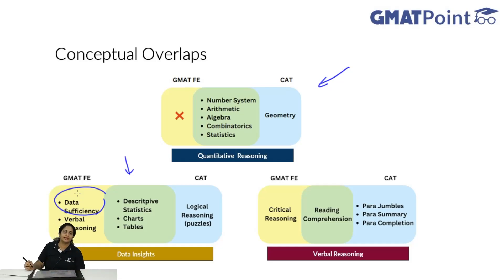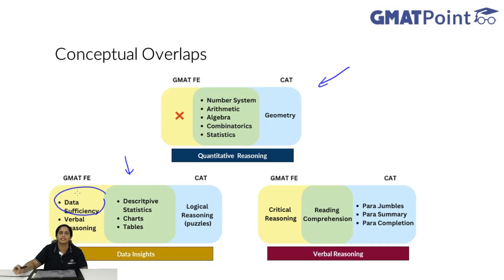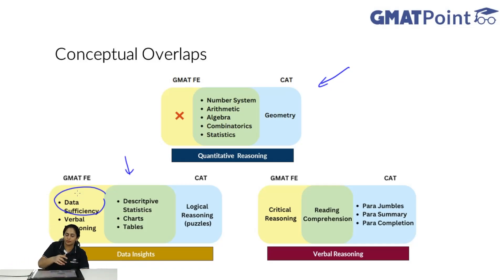Now let us consider verbal reasoning. For CAT, it is reading comprehension and verbal ability. For GMAT, it is basically verbal reasoning. Reading comprehension is a big part of CAT and also a big part of GMAT. So if you are trying to optimize your preparation for both exams, obviously start with reading comprehension — go deep into it. Reading comprehension is difficult in both exams: it is not easy in GMAT, neither is it easy in CAT, which means you are going to need a lot of practice, a lot of work, a lot of thinking. This is one way you can make sure you get a decent score in both exams.